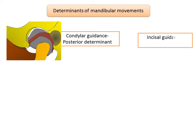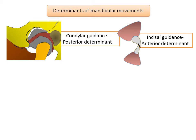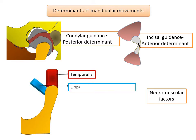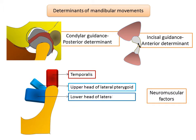Incisal guidance is the anterior determinant. It is the influence of the contacting surfaces of the mandibular and maxillary anterior teeth during mandibular movements. The lingual surface of the maxillary anteriors guides the mandible during protrusive movement, and this is known as incisal guidance. It is absent in completely edentulous patients and needs to be reproduced arbitrarily in complete dentures. The third factor is neuromuscular factors — the muscles of mastication are the most important determinants of mandibular movements, and muscle tone also determines freedom of movement.